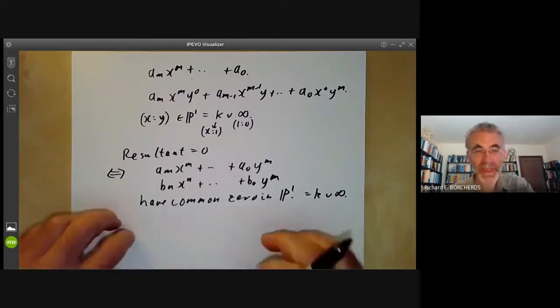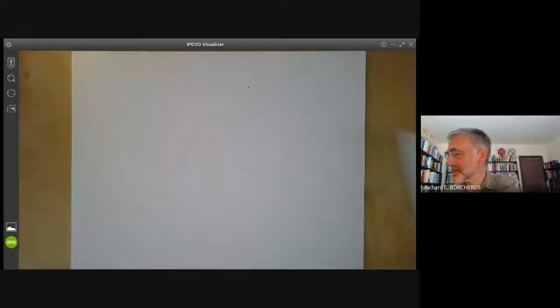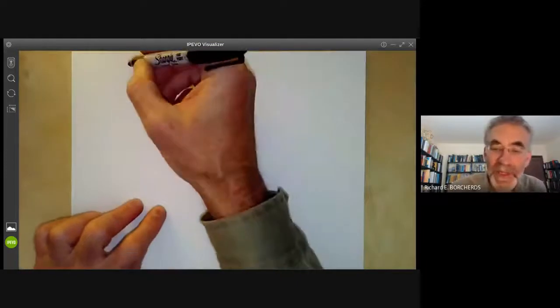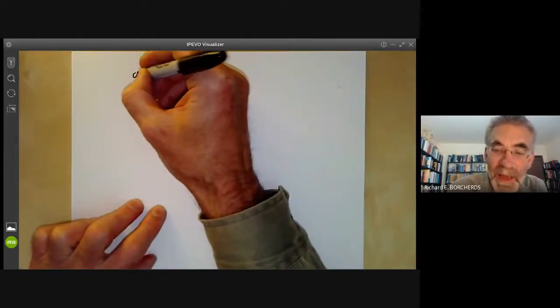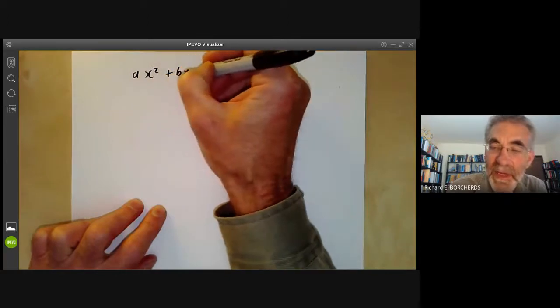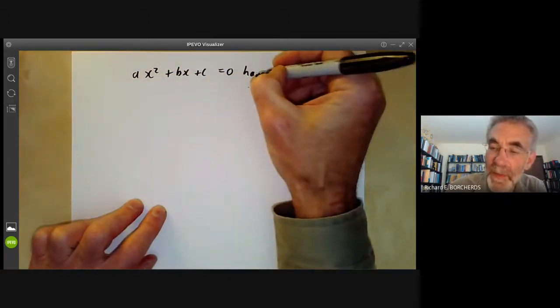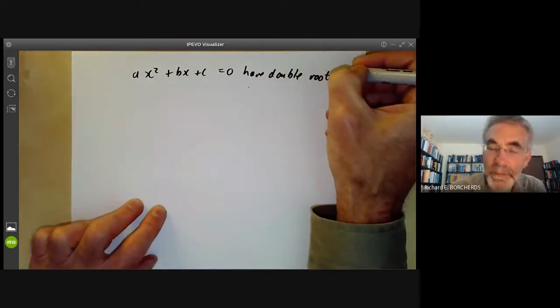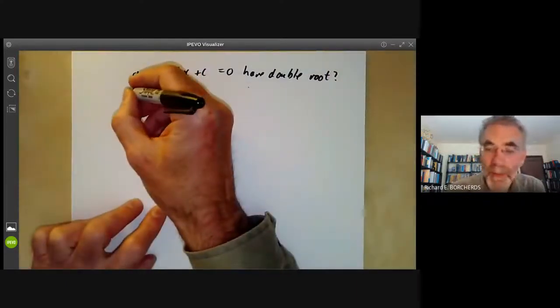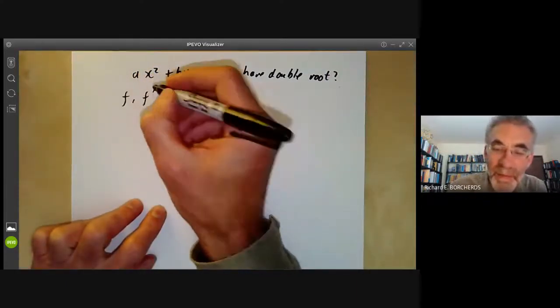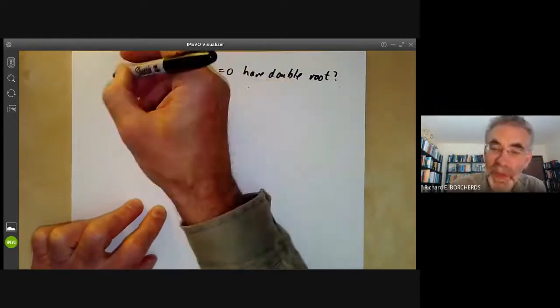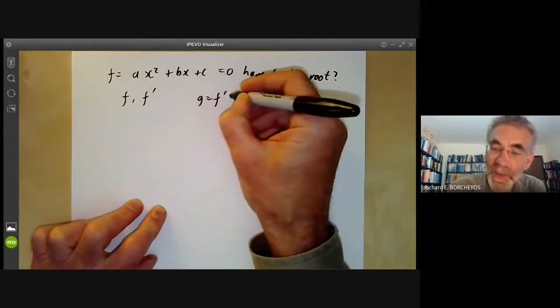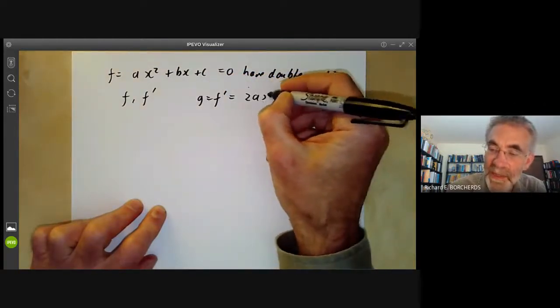So let's see an example of this. First of all, let's just ask, when does the polynomial ax squared plus bx plus c equal 0 have a double root? Well, the polynomial f has a double root if f and f prime, its derivative, have a root in common. So we're going to take f to be our polynomial here and g to be f prime, which is equal to 2ax plus b.